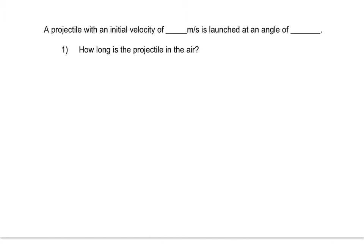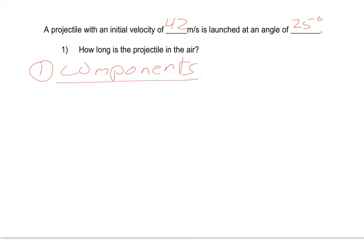A projectile with an initial velocity — I'm going to go with 42 meters per second, at an angle of 25 degrees. So it says here, how long is the projectile in the air? The first step to solve this is I need to break this initial velocity into components. To do that, I'm going to draw a quick diagram with my angled vector. This is my initial velocity.